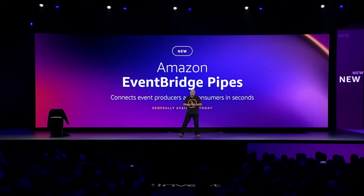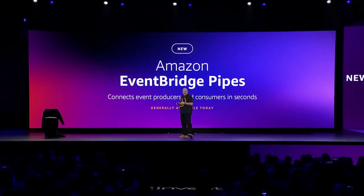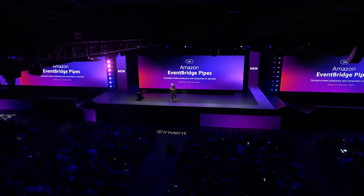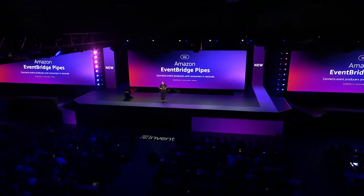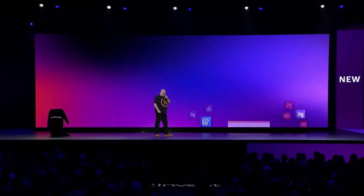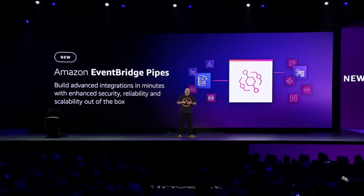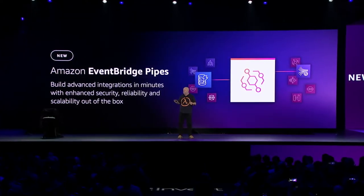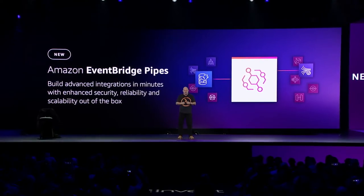Amazon EventBridge Pipes allow you to easily stitch AWS services together. It's a new feature specifically designed for integrating messages from different AWS services. It is point-to-point, event producers against consumers, and a way to manipulate the events that flow through the pipe. The idea is that you should no longer have to write the glue code — you can easily stitch these services together.